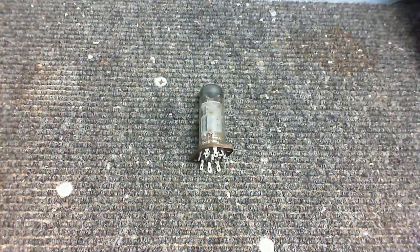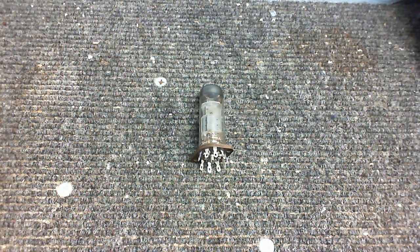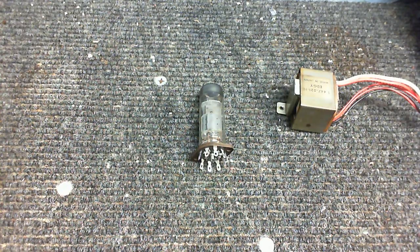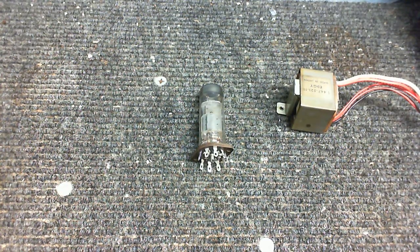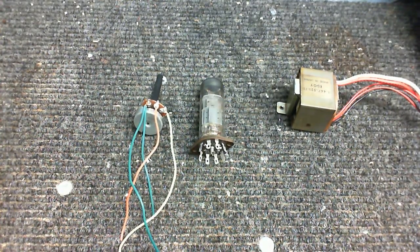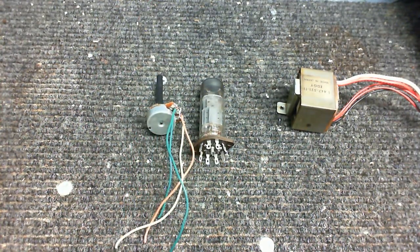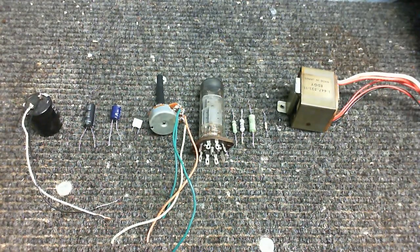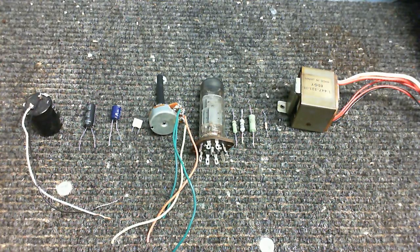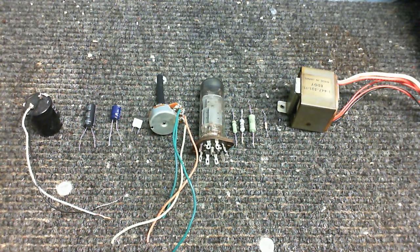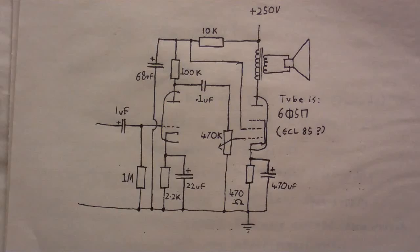So, let's take a look at the parts we're going to use. Obviously, there's the valve. We're going to need something to connect this to a speaker, so output transformer. Going to need to be able to adjust the gain, so potentiometer. And of course, various capacitors and resistors.